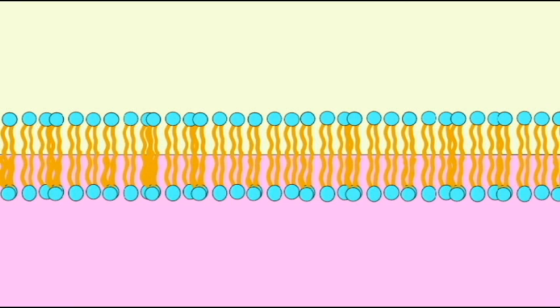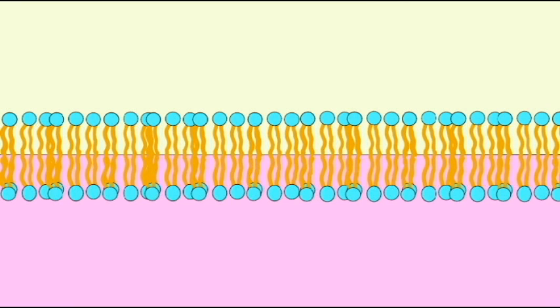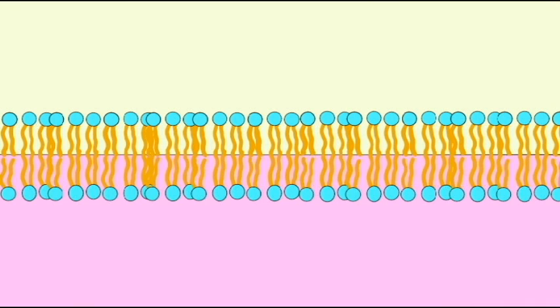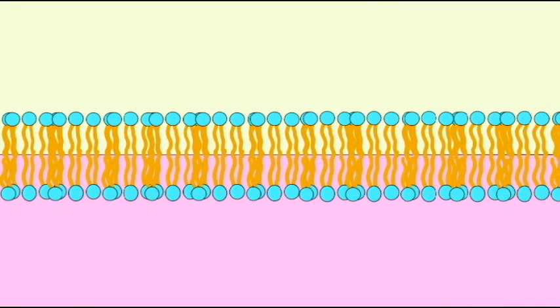Phospholipids are the primary lipids which compose cell membranes. There is a double layer of phospholipids.